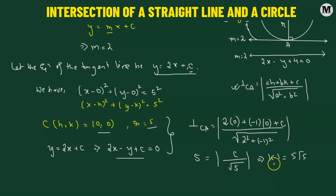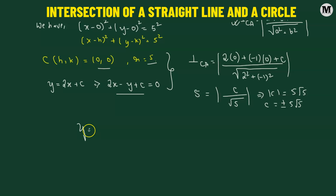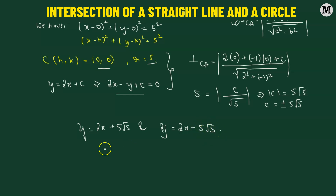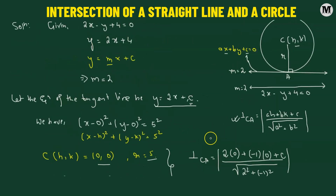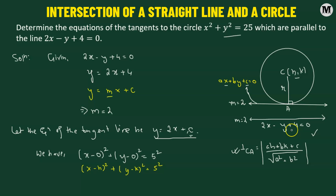Removing the absolute value, c equals plus or minus 5 times the square root of 5. This means there are two tangent lines. The two tangent line equations are: y equals 2x plus 5 root 5, and y equals 2x minus 5 root 5. These are the two equations of the tangent lines. Since it's given that the tangent lines must be parallel to 2x minus y plus 4 equals 0, both lines satisfy that condition, touching the circle at two different points.